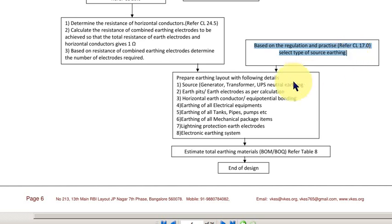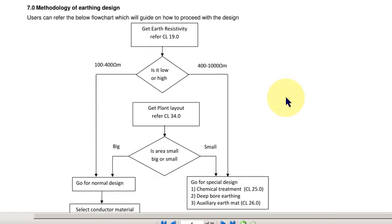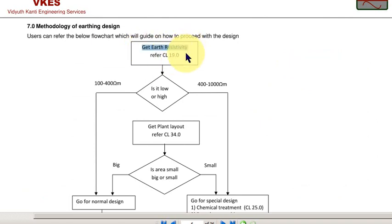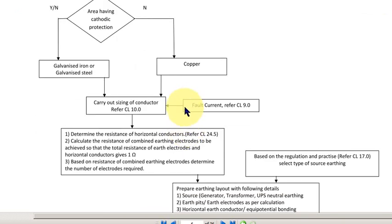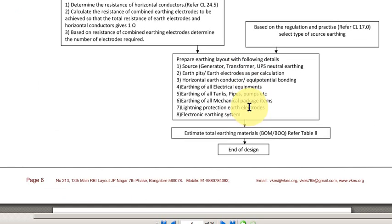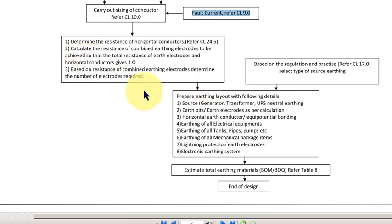Finally, what is the final outcome? What is the input? The input is earth resistivity from the soil test report, plant layout from the mechanical department, the fault current calculation from the power system study group. What is the output? Output is, you have to make a layout and you have to prepare a bill of quantity. These are the two outputs.